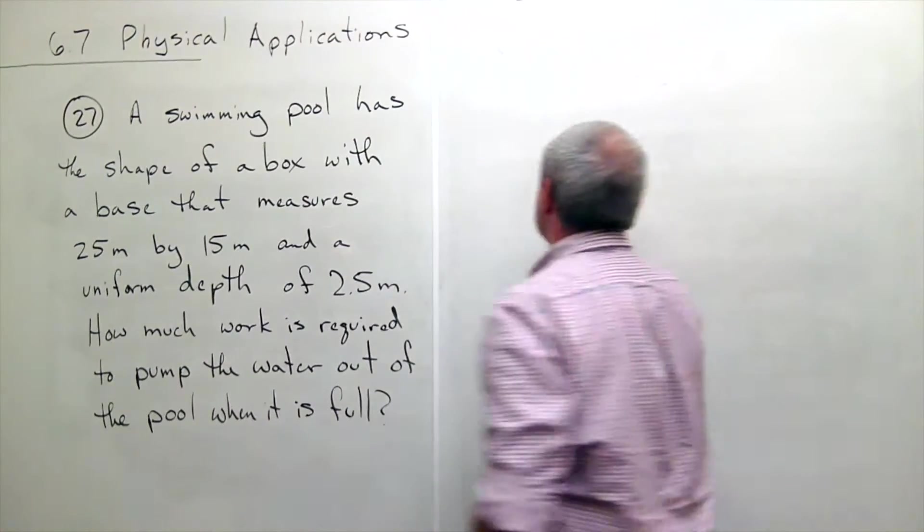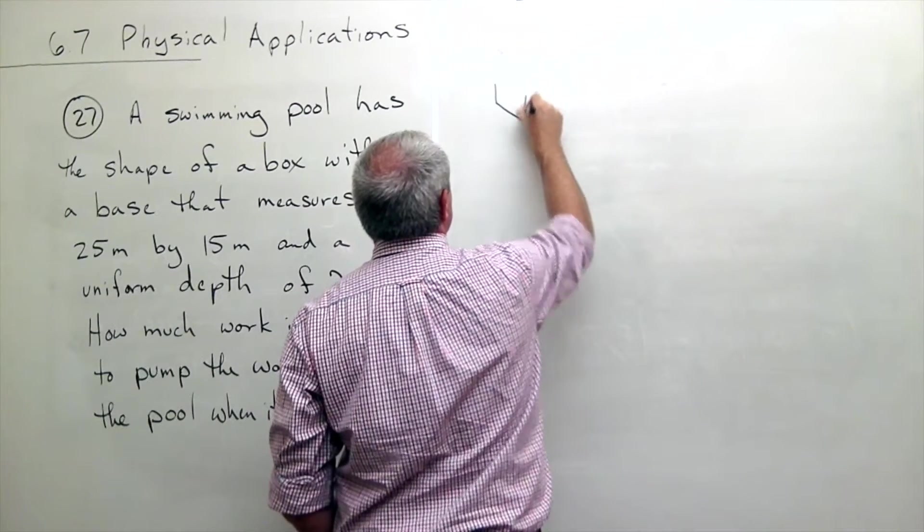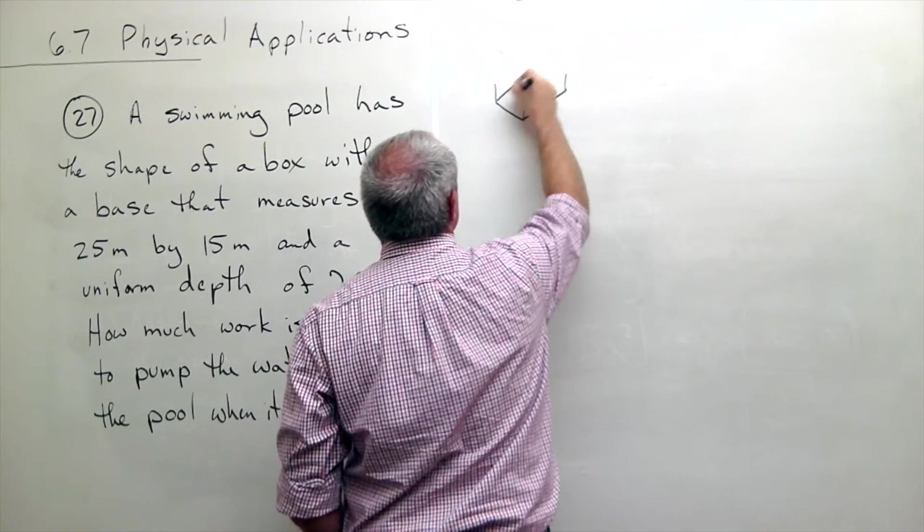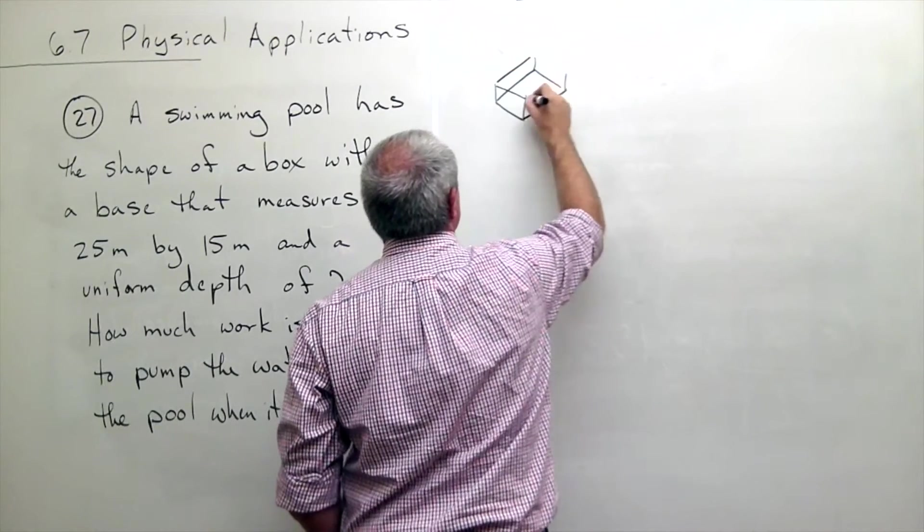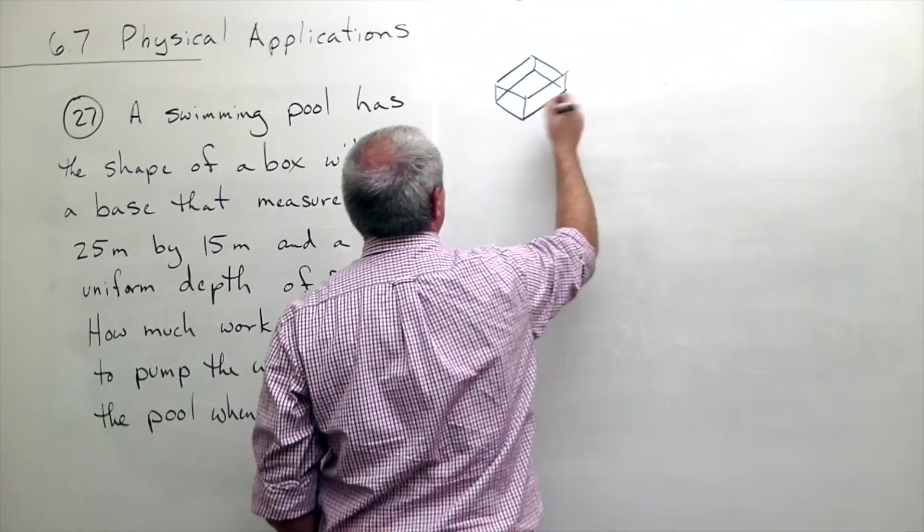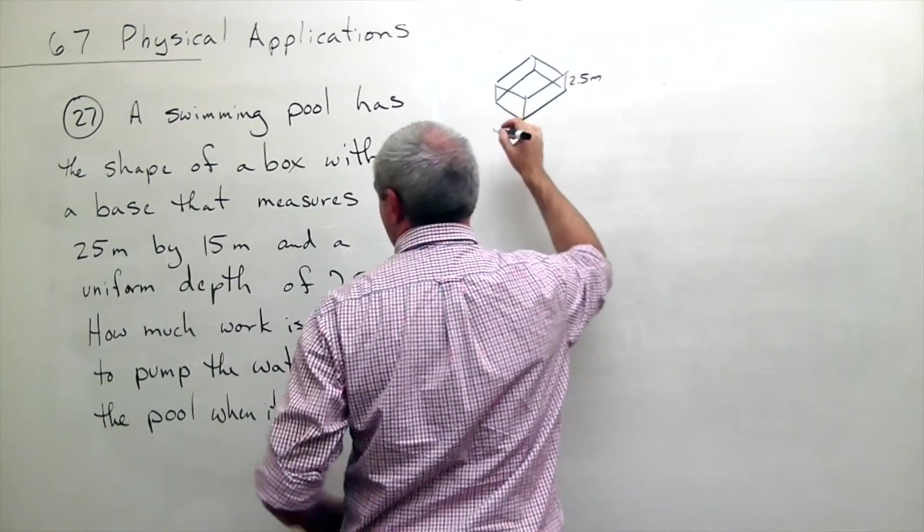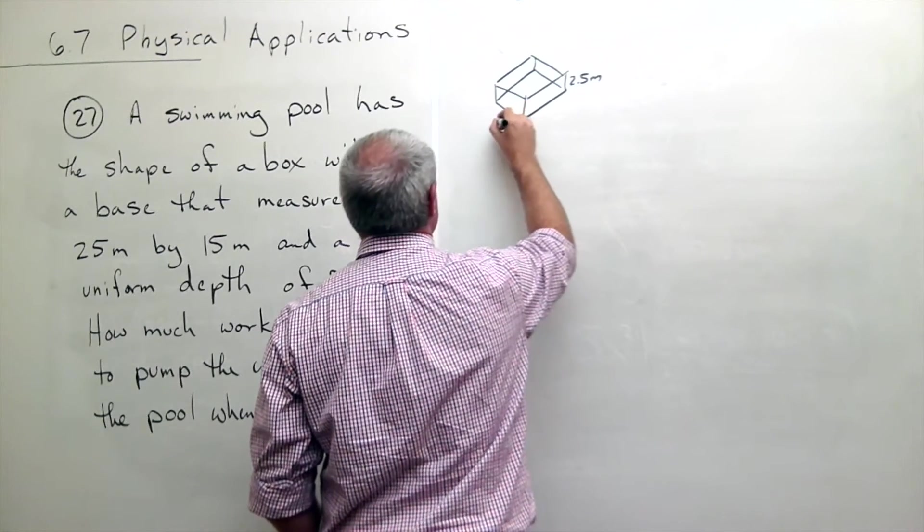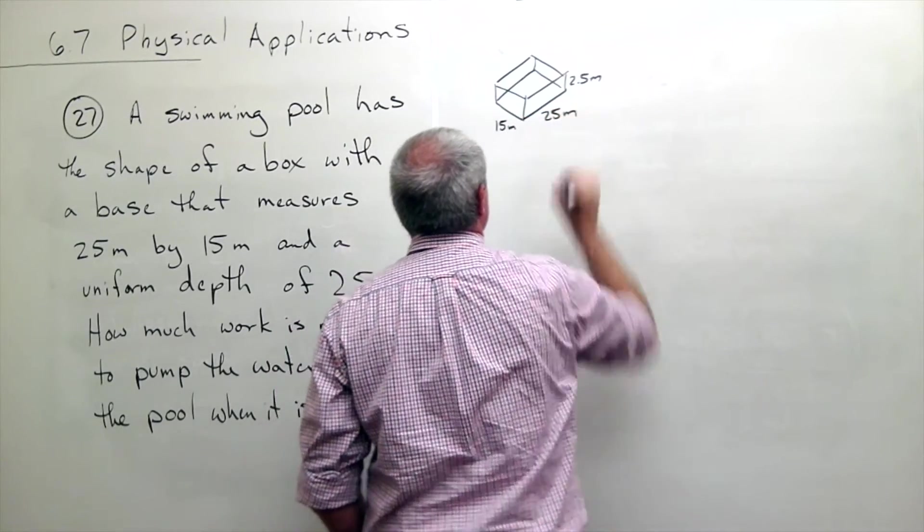Okay, so we've got this pool. It's fairly shallow. And we know that the depth of the pool is 2.5 meters. And then the length and the width of this pool are 15 meters and 25 meters.